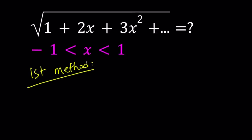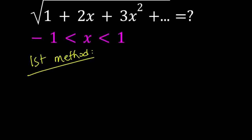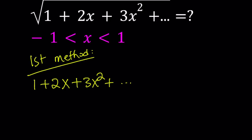Our first method is kind of interesting, and we use this back and forth for infinite series or sums like this. So suppose we have the following sum: 1 plus 2x plus 3x squared. Let's go ahead and call this S — S for sum.